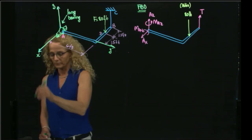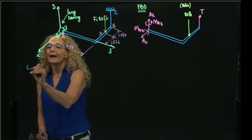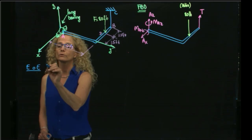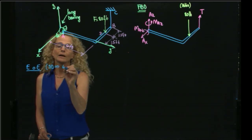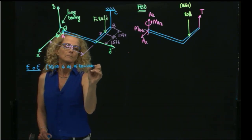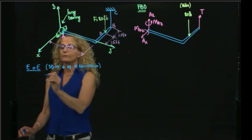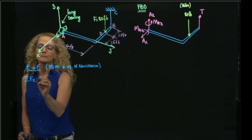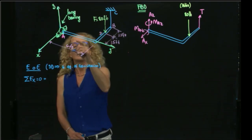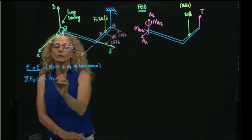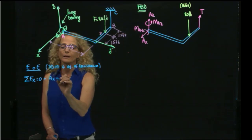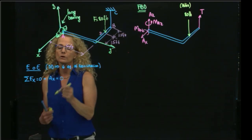The free body diagram is always the first step in solving an equilibrium problem. The second step is applying the equations of equilibrium. In 3D problems we have six equations. The first equation is the sum of forces in x equals zero. I have Ax and no other force in the x direction, therefore Ax equals zero. That's my first result.